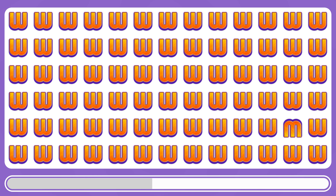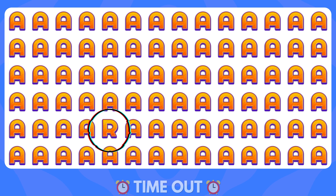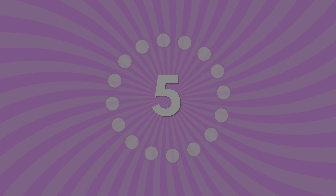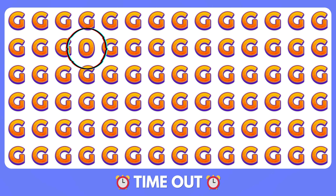Which letter doesn't look the same? The letter W is rotated to the other side. How about this puzzle? The letter R is odd among the As. Where is the odd letter O? This is the odd letter compared to the Gs.